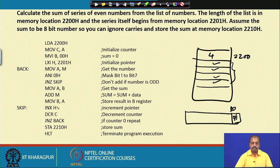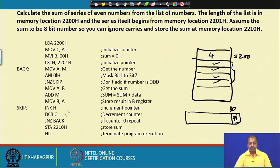The H register is incremented to move to the next number, and the C register is decremented. As long as C is not 0, we jump back to process the next number. Once C becomes 0, we have added all even numbers. The value is stored at location 2210 hex using STA 2210 hex, which stores the accumulator content at that location.